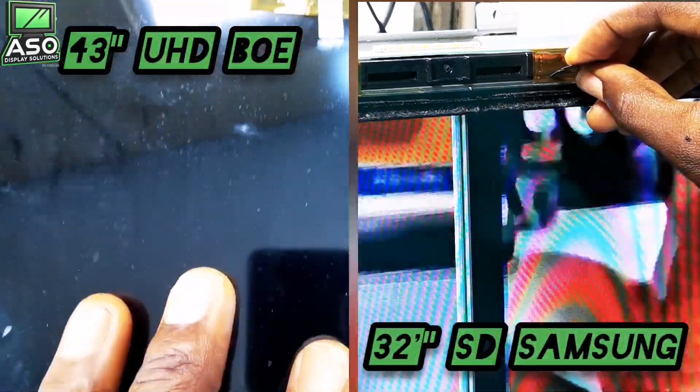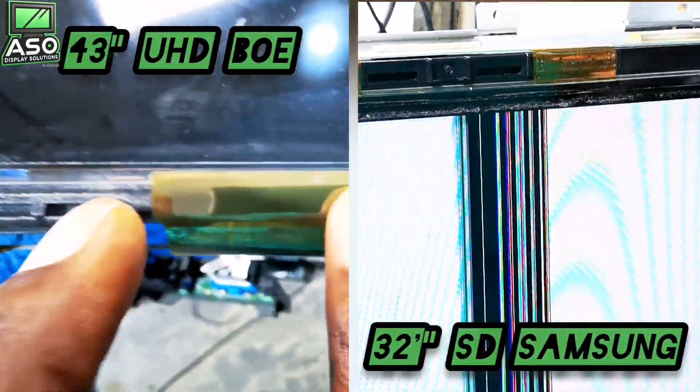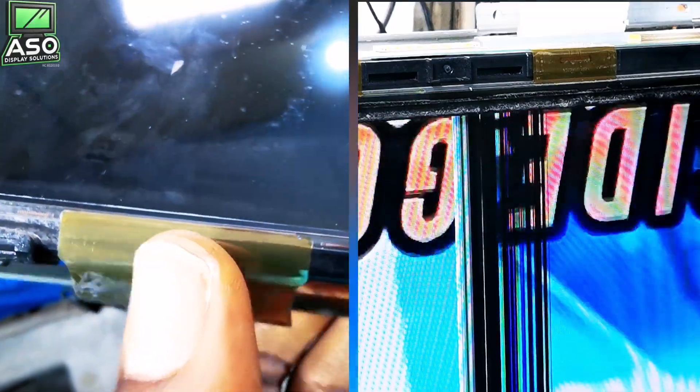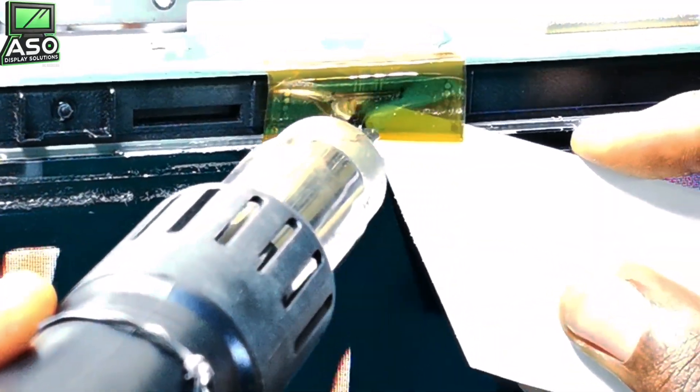These 43 inch UHD BOE and 32 inch SD Samsung panels were fixed using both soda and ACF. Maybe you wonder, why do such a repair?